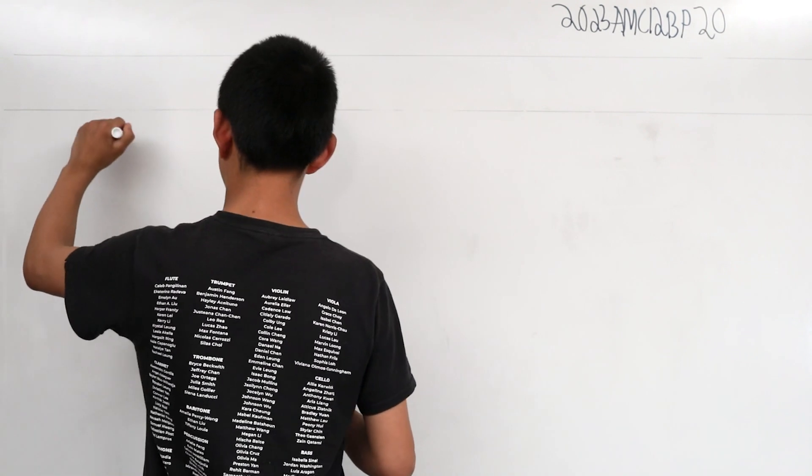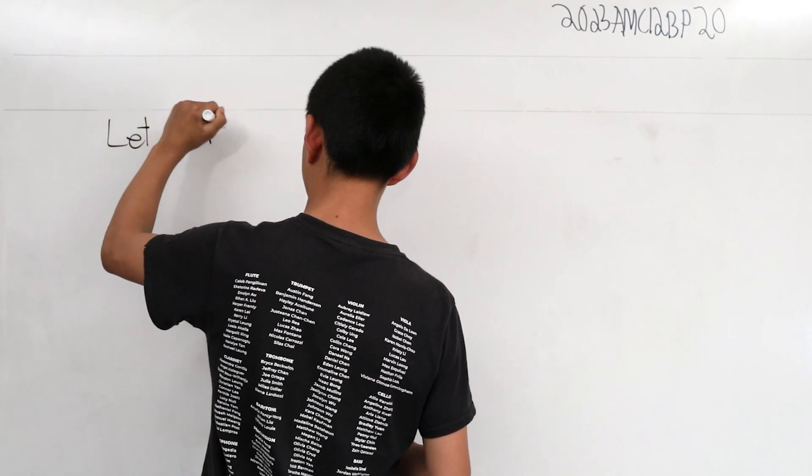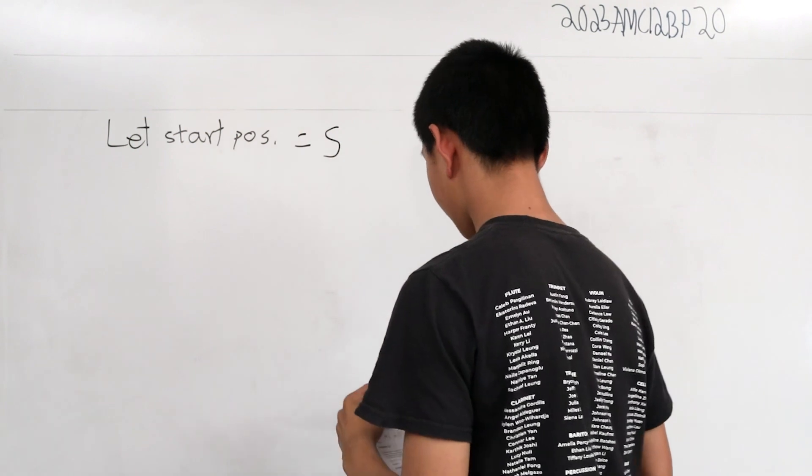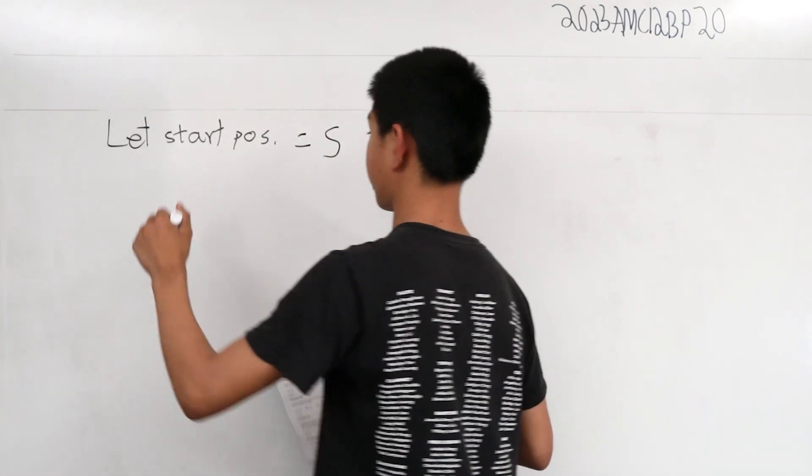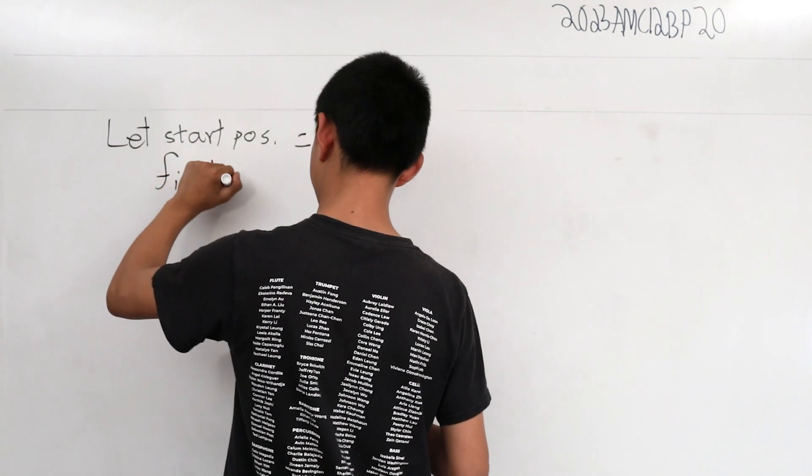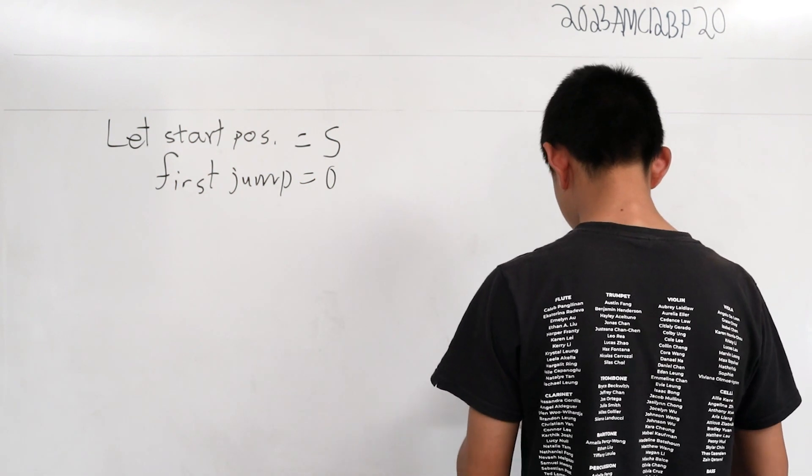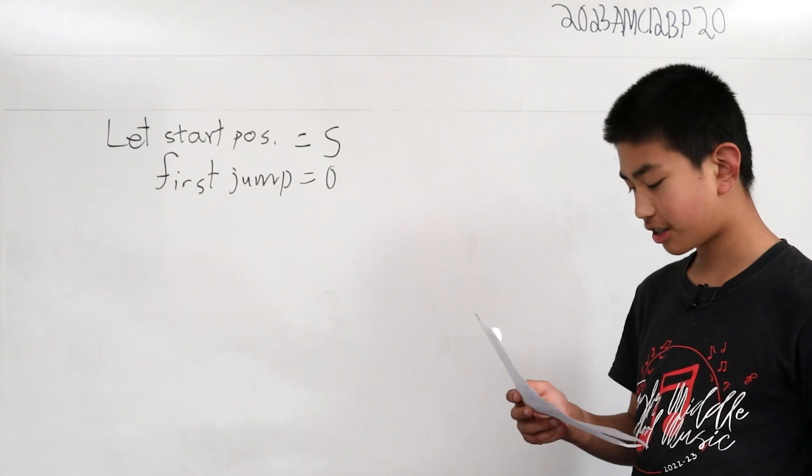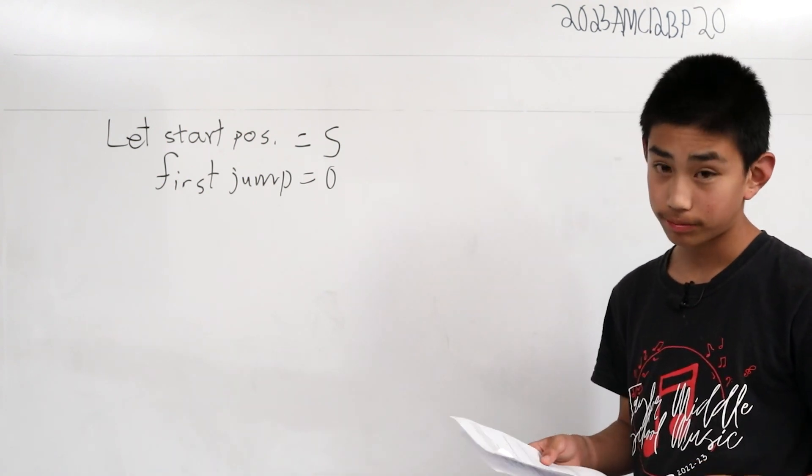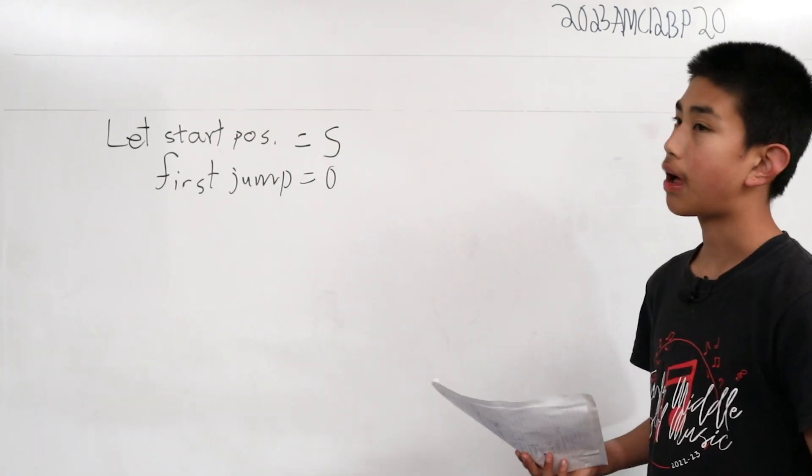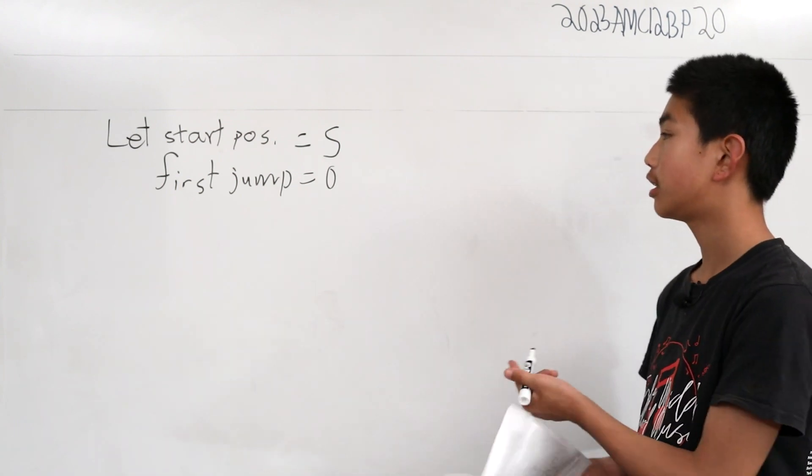So basically you can draw graphs, but you want to deduce a sort of formula. Let's let his starting position be S, and let's let his first jump equal to 0. So he can jump two units in a direction, two more in another one. Now what we can do is sort of deduce a formula by ideally drawing out a graph to demonstrate this phenomenon.